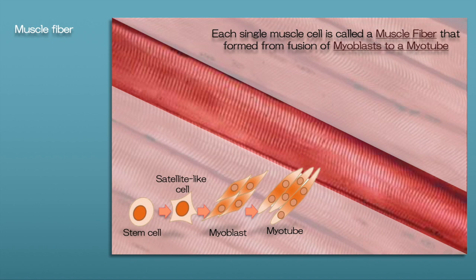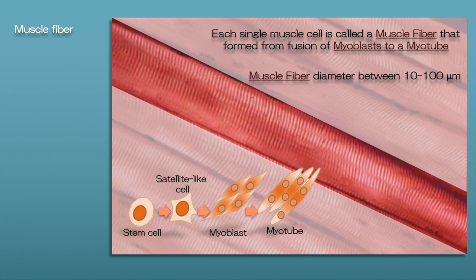This differentiation is completed around the time of birth, and after that no new fibers are formed from myoblasts. Adult skeletal muscle fibers have a diameter between 10 to 100 micrometers, and the length can extend up to 20 centimeters.